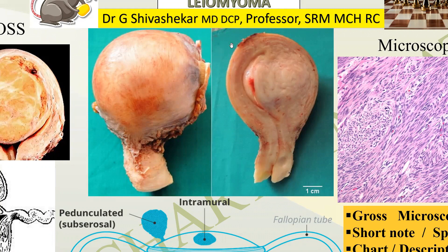When I go to the cut surface, I am finding a large tumor which is displacing the uterine cavity. Normally the uterine cavity is something like a triangle, but here it is compressed and pushed to one side. I am able to see a solid pinkish-white tumor which has a whorled appearance. This is the normal myometrium and this is the cut surface of the cervix — it has got a Nabothian cyst.